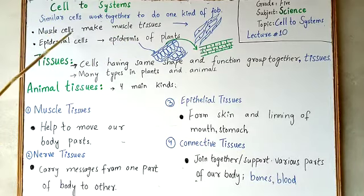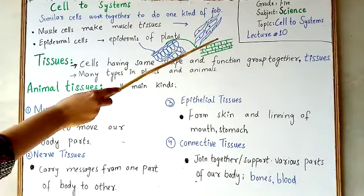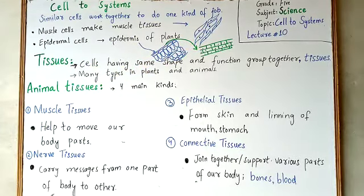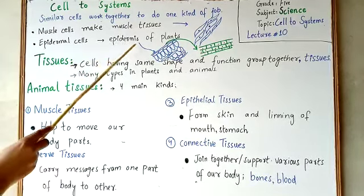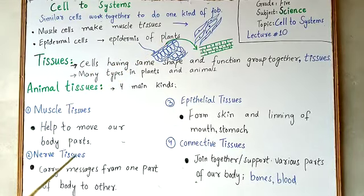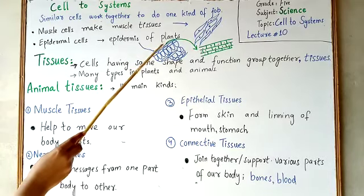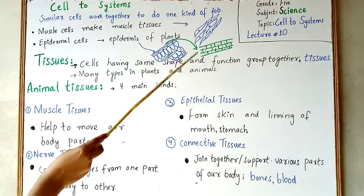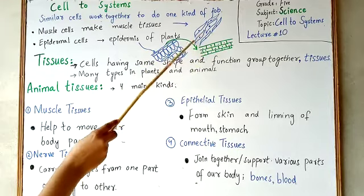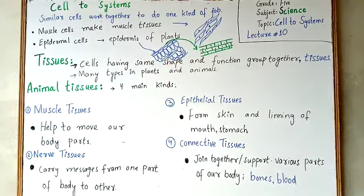When muscle cells combine together they form muscle tissues. These are the similar cells of muscles combining to form muscle tissues. This is the example of a muscle tissue. Epidermal cells combine together to form the epidermis of a plant — the outer covering of the plant that protects it.